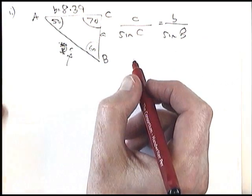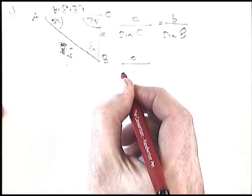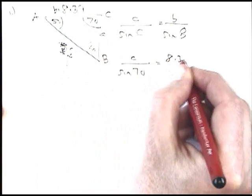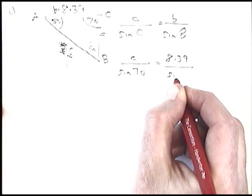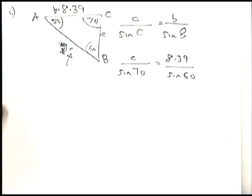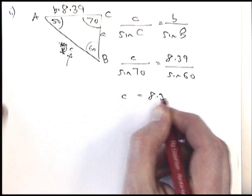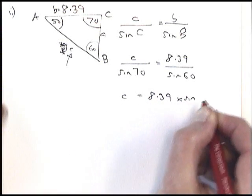Now it's a case of sticking the numbers in the right place. C I don't know. That's sine of 70. B is 8.39. And sine of B is sine of 60. So to get the c on its own, I need to move this sine of 70. And that will be multiplying by the 8.39. It's already on the right hand side.